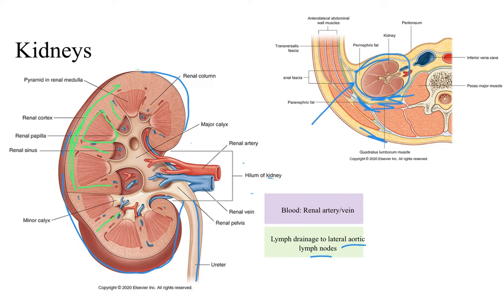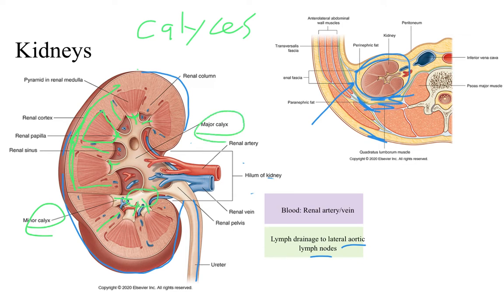At the tip of each renal pyramid, or the apex, you have what's called the renal papilla. The renal papilla is important because that's where all of the collecting ducts — where the stuff that's going to become urine, and at that point it is urine — empty into these smaller spaces called minor calyces. Calyx is singular, calyces would be plural. These minor calyces will then coalesce together to form a bigger group called a major calyx.